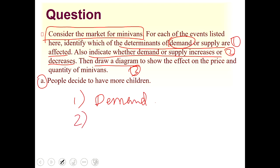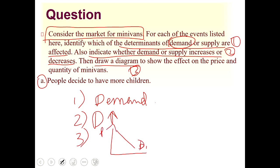As people have more children, the demand for minivans will increase. To show this on a diagram — with price on the vertical axis and quantity on the horizontal axis — an increase in demand leads to a rightward shift in the demand curve, moving from D1 to D2.